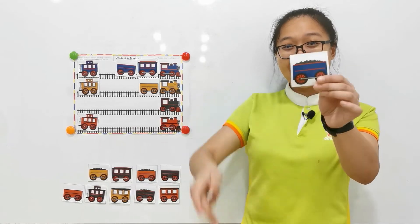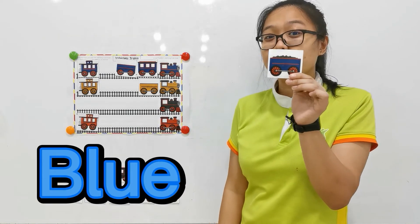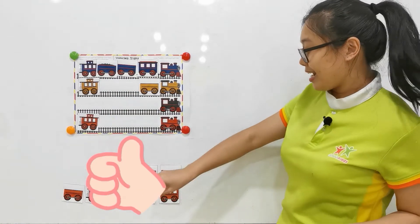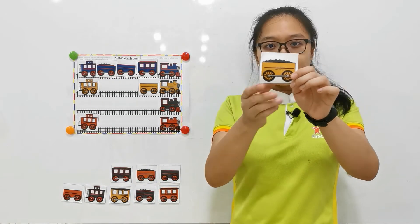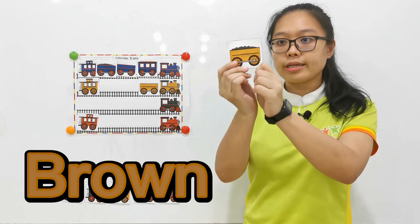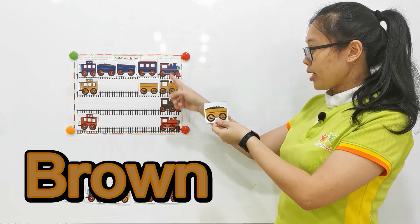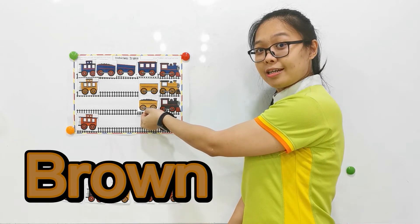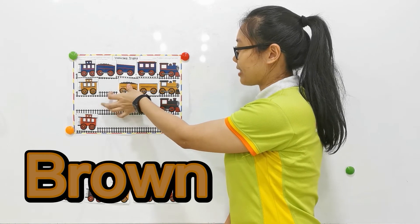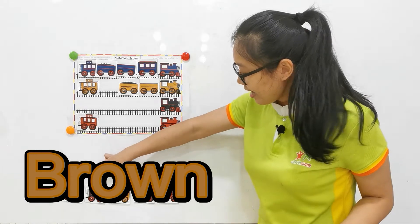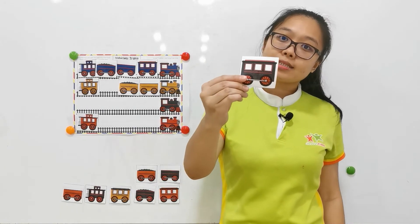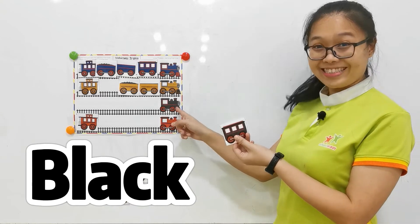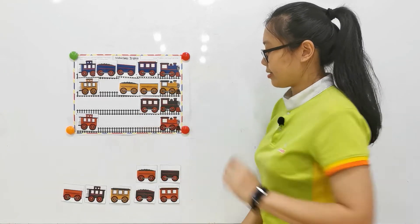Try for the next one — blue again. Can you tell me the answer? Where should we put this one? It's with the blue trend. We complete the first one! Let's try for the next one. What color is this? This is the brown color. So we should put it — first one, second one, third one, or the fourth one? We should put above, together with the brown color. And for the next — what color is this? This is the black color. So let's find the black trend. It's here. Let's put here. Nice one.